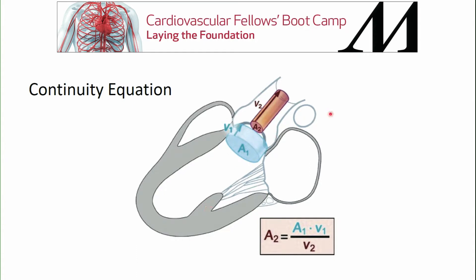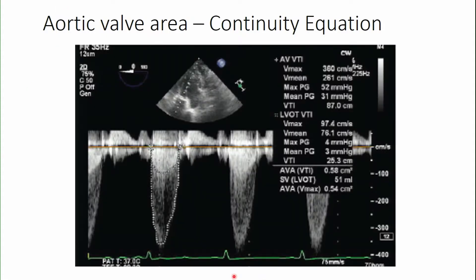This illustrates the continuity equation: the area in the LVOT times the velocity there must equal the area at the aortic valve times the velocity through the aortic valve. Here is the Doppler trace through the aortic valve and the trace through the left ventricular outflow tract. We have the LVOT area from a separate measurement, giving us three of the four parameters, and we simply solve for the fourth.